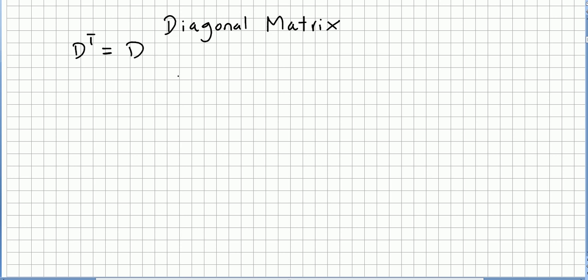In this video we have been introducing the concept of diagonal matrix. This is a quick video to prove that if D is a diagonal matrix, the transpose is equal to the matrix itself. So we pick D, a diagonal matrix, where D is Dij. Let us call the transpose of D, Aij.